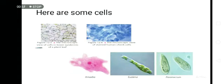Here are some cells. We have here the microscopic view of cells in lower epidermis of a leaf, the microscopic view of stained human cheek cells. Here are some of the other cells you can see.